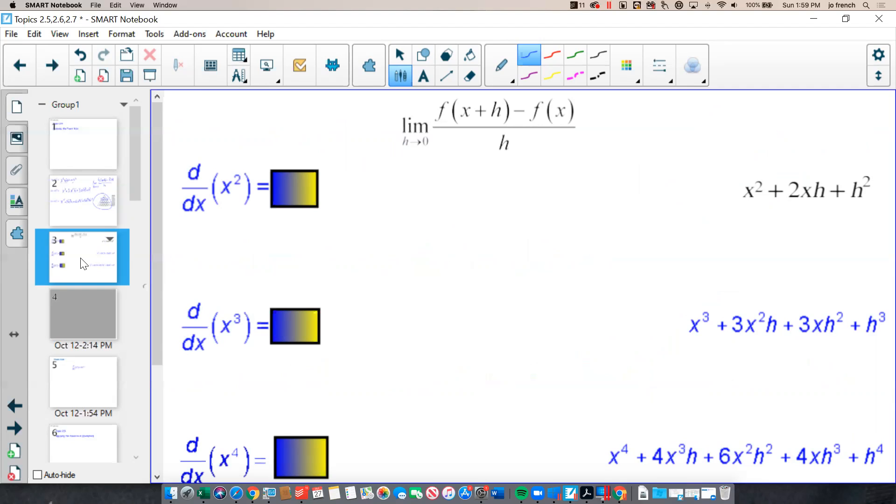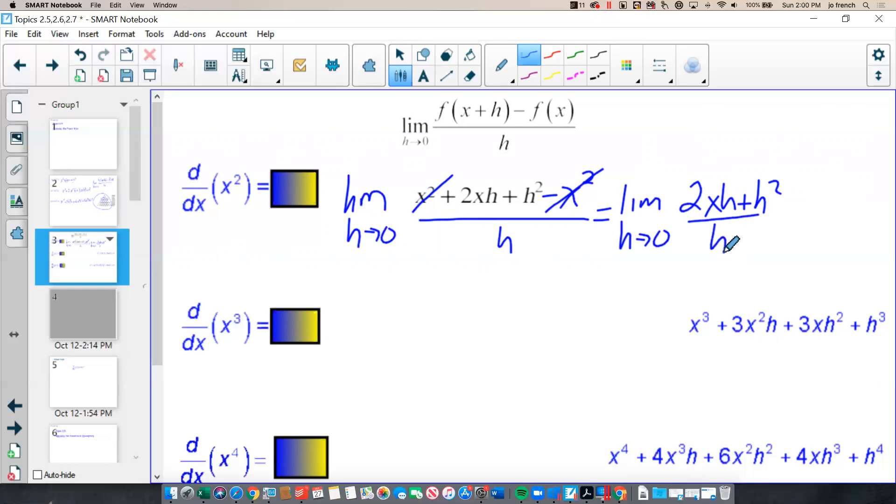as h approaches 0, of f of x plus h, which we just determined was x squared plus 2xh plus h squared, minus f of x. And f of x is just x squared, all over h. When we simplify, we get our limit. Don't forget to use the limit notation in every step of the process. Our x squareds will cancel out, x squared minus x squared, leaving me 2xh plus h squared over h, which then allows us to cancel out an h from every term, divide out an h, which gives me the limit, as h approaches 0, of 2x plus h, which, when h goes to 0, simply leaves me with 2x.